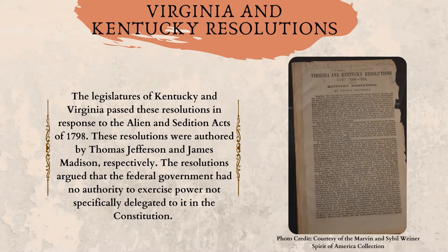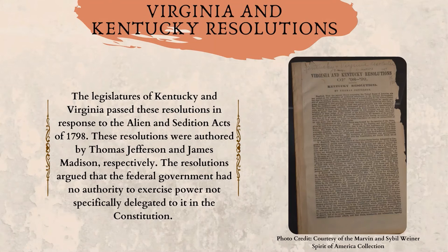Virginia and Kentucky Resolutions. The legislatures of Kentucky and Virginia passed these resolutions in response to the Alien and Sedition Acts of 1798. These resolutions were authored by Thomas Jefferson and James Madison, respectively. The resolutions argued that the Federal Government had no authority to exercise power not specifically delegated to it in the Constitution.